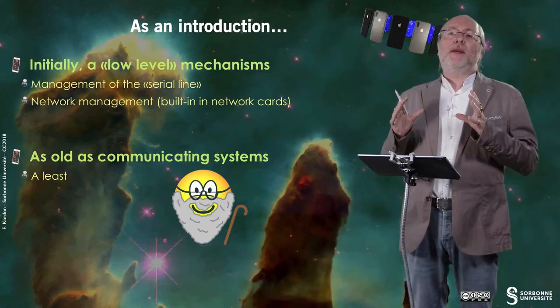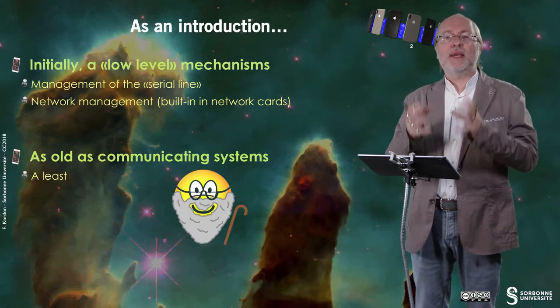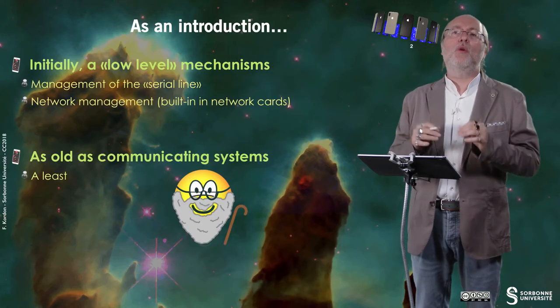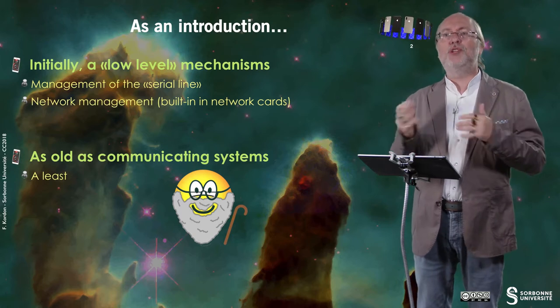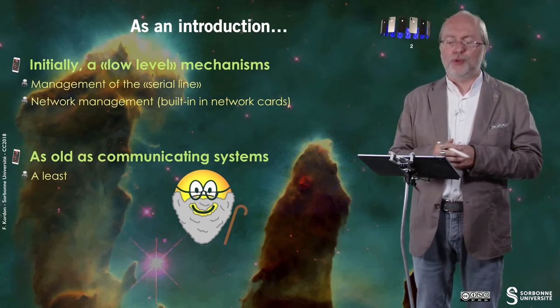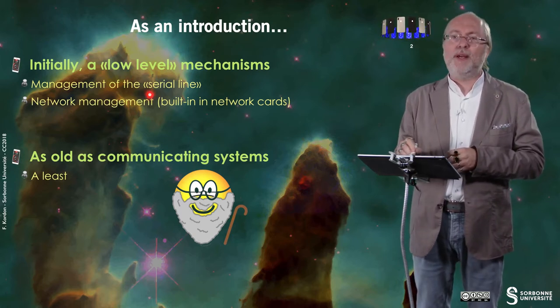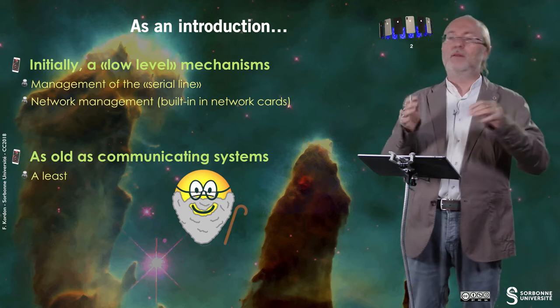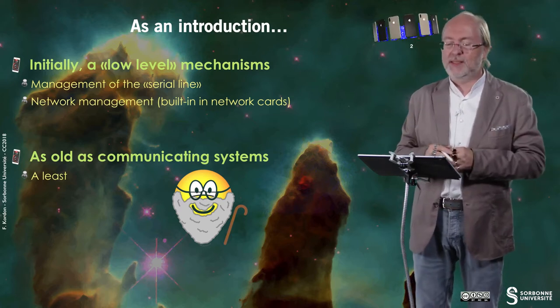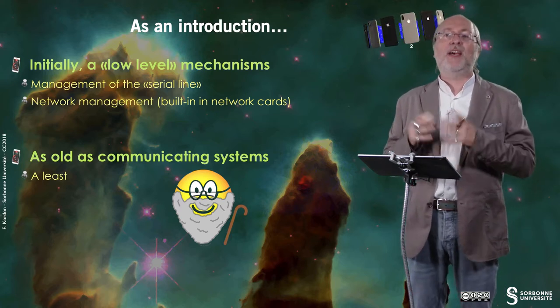Hello everybody! In this video, I will present you a mechanism called the event-driven loop. Initially, this is a low-level mechanism that was basically used for communication between computers, especially through a mechanism known in the prehistory of computer science called the serial line.